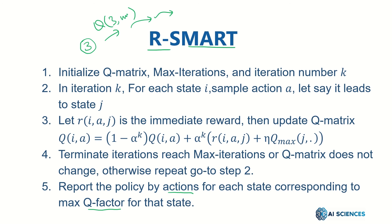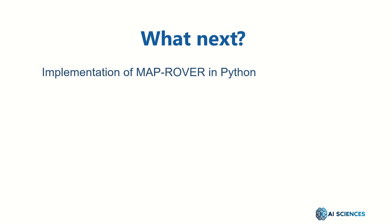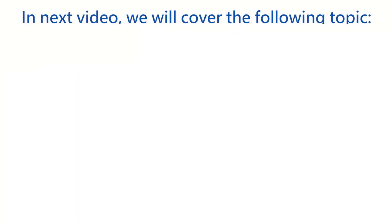So that's the detail of the RSMART algorithm. In the next part of this video, we will implement the MapRover example completely in Python using NumPy, showing the optimal path, policy implementation, sampling, and so on. The next video will be the most exciting and may give you a better understanding of what we have discussed in reinforcement learning. Hope to see you in the next part. Thank you.